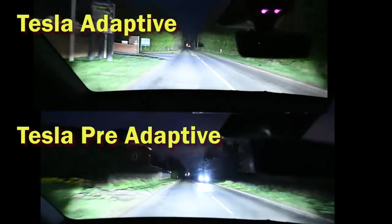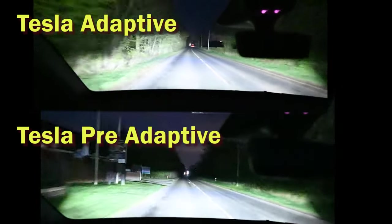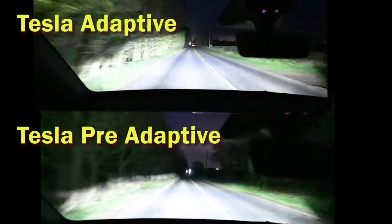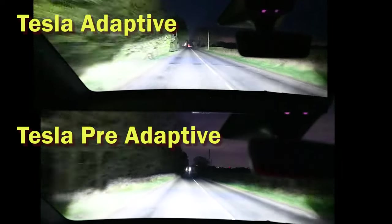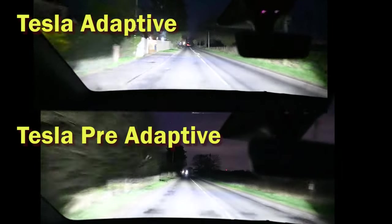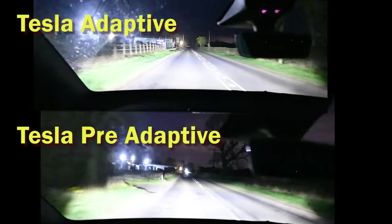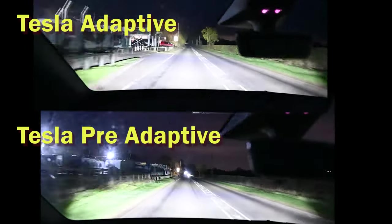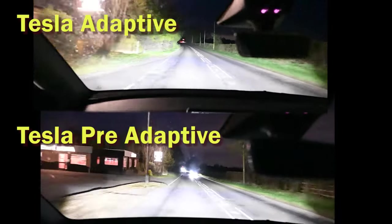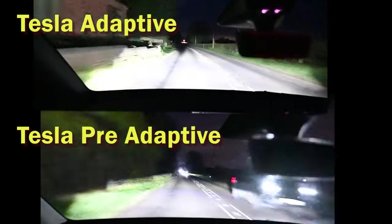We can see with the bottom, where we have the pre-adaptive headlights, it's on low beam because of the oncoming traffic before it can flick to high beam. Whereas the top picture has the high beam and it actually illuminates a lot more of the road, or more in particular the actual side verges.